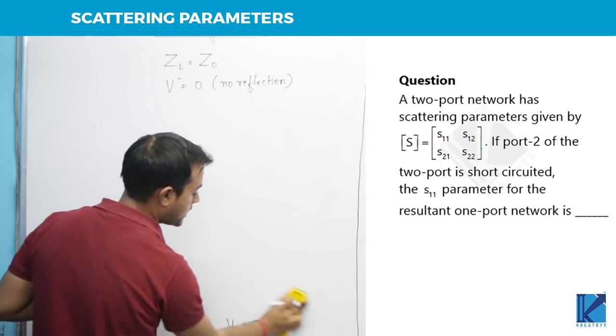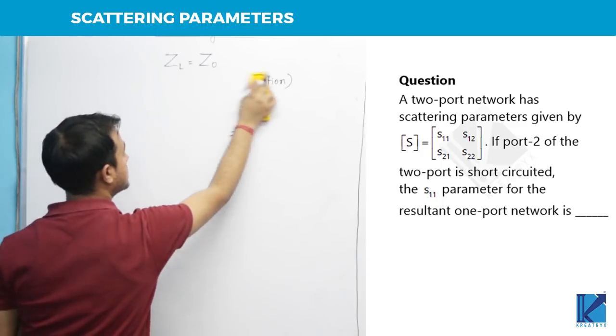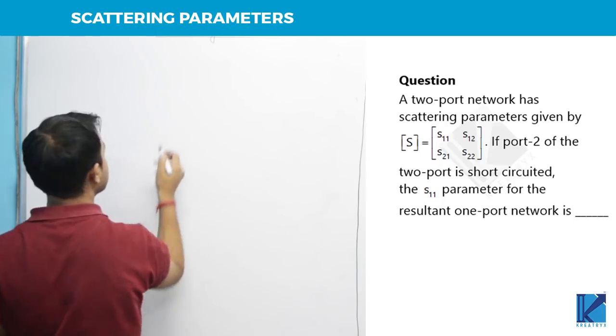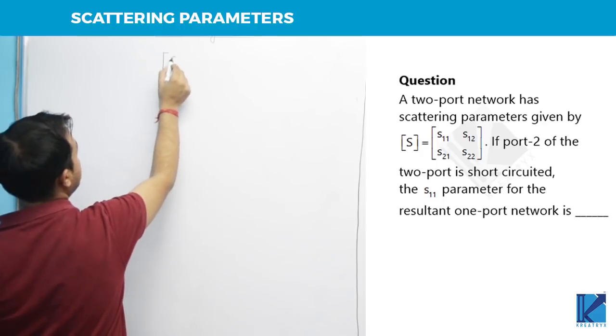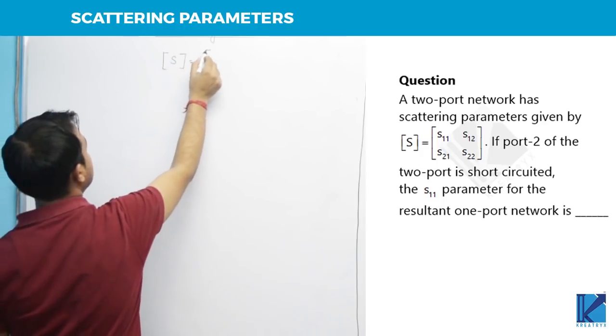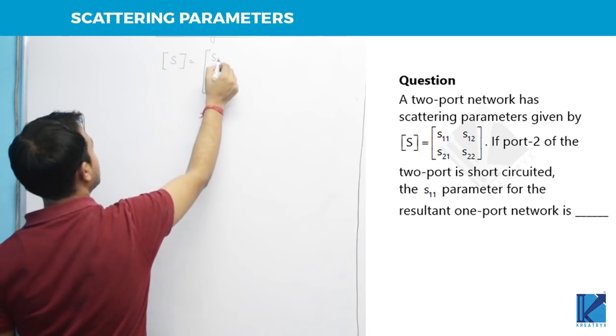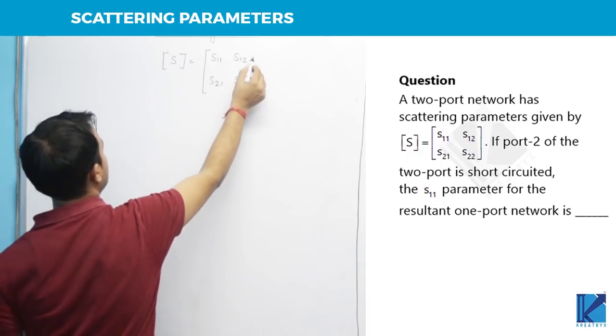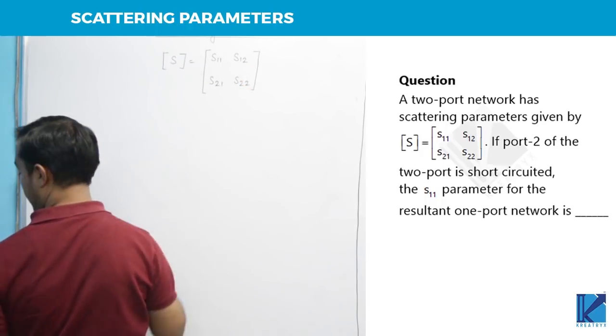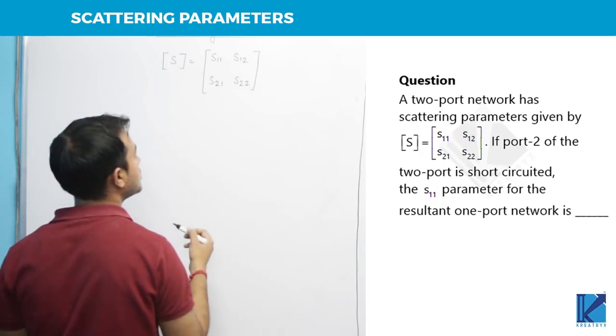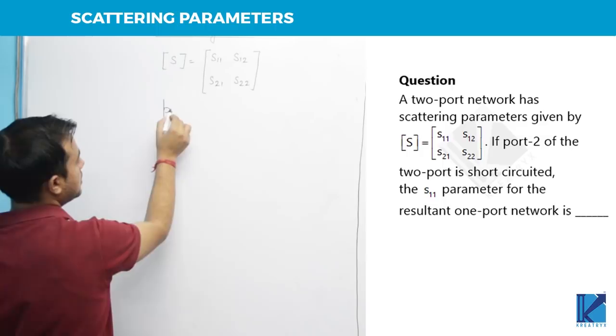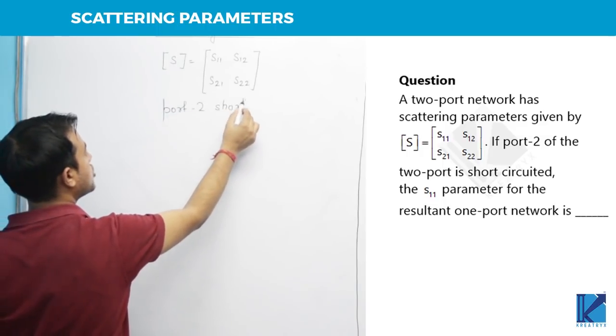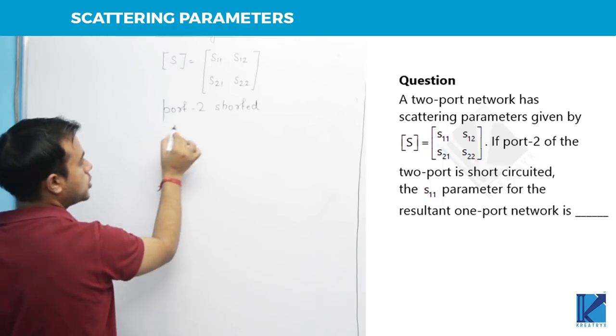Now, let us look at the problem which is shown on your screen. This was asked in GATE. So what it is saying is, scattering parameters are given like this: S11, S12, S21, S22. Now it is saying the port 2 has been short circuited. If port 2 has been shorted, if you think in terms of B2 and A2, B2 was reflected, it should be negative of the incident.